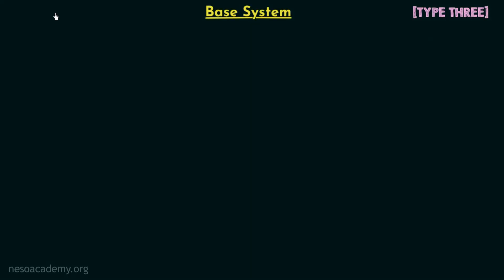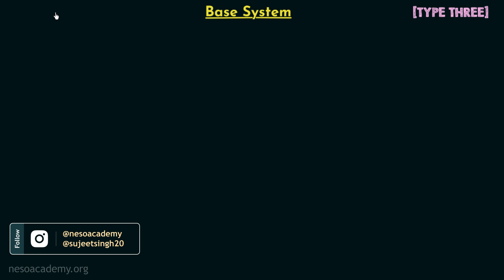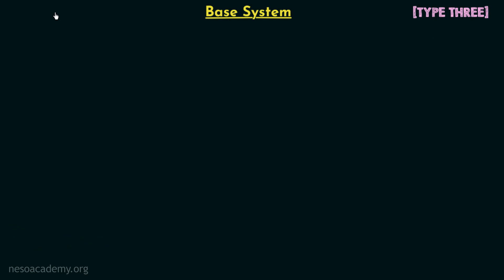Till now, we have discussed two topics in this chapter. In the first topic, we saw how to calculate the total number of factors in a given number. Along with this, we also saw how to calculate the total number of odd factors, the total number of even factors, and the total number of prime factors. Then, in topic number 2, we saw how to calculate the highest power of a prime number and a composite number in a given factorial.